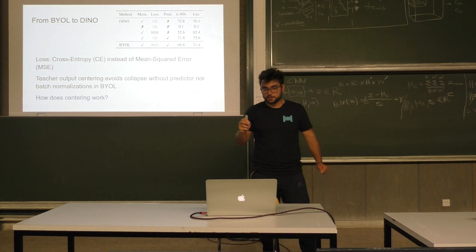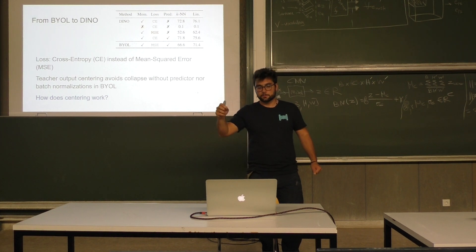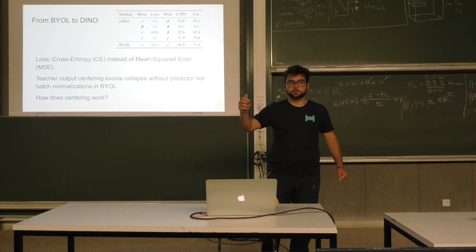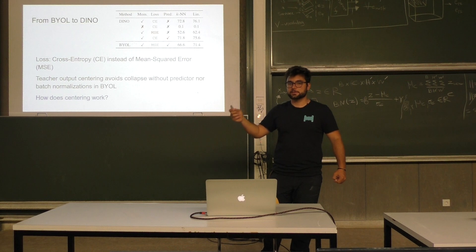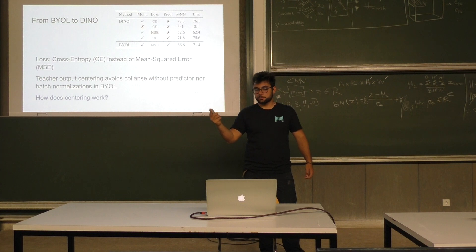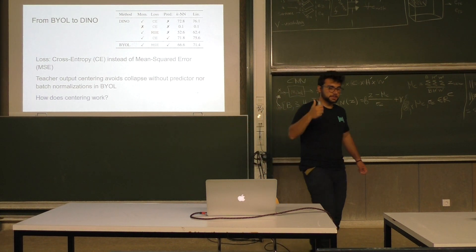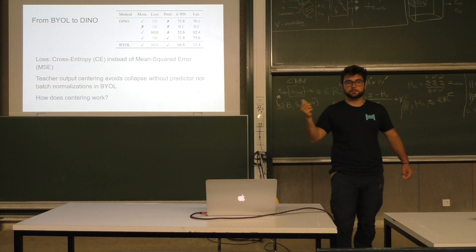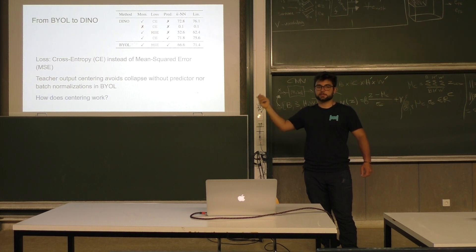It's important to highlight that this was the first work that was not dependent on batch normalization. So here we are not dependent on batch normalization for the first time, and for the first time we are able to train vision transformers with this architecture. Even though vision transformers already existed for about 2 years, this was the first work able to train a transformer network with self-supervised learning in the vision domain.